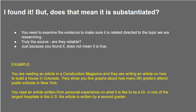So if you find examples or text that you want to use, does that mean it is substantiated? No, not always. You need to examine that evidence and make sure it is directly related to the topic that you are researching. You have to ask if the source is reliable — just because you found it, it doesn't mean it is true. For example, if you are reading an article in a construction magazine about how to build a house in Colorado and they show you graphs about how many 5th graders attend public schools in New York, or if an article on what it is like to be a doctor in one of the largest hospitals in the United States is written by a second grader — neither of these seems substantiated. There are articles you can find, but it doesn't mean they relate to one another.